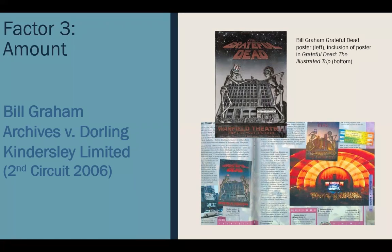The court also said that even though the book was a commercial venture, the actual images in question were being used in a way that's incidental to the commercial biographical value of the book — the images are not being used to promote the sale of the book. So the court found this an example of transformative use, placed less weight on the commercial nature, and this factor weighs in favor of fair use. Under the second factor — nature of the copyrighted work — the original images are highly creative, which typically would weigh against fair use, but again, because the use was transformative, less weight is placed on this factor.